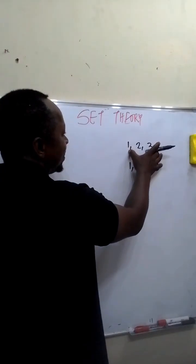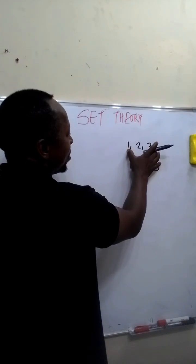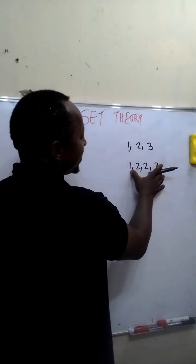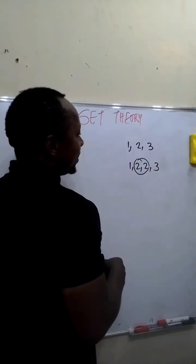In the first case, these are distinct objects because there is no repetition of number or duplication. In the second case, the number 2 is repeated or duplicated.